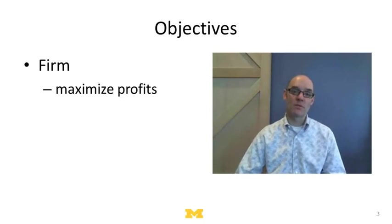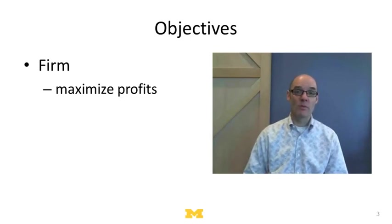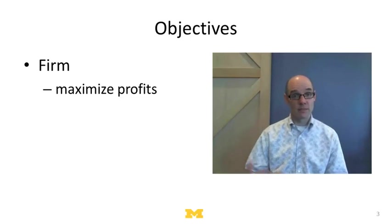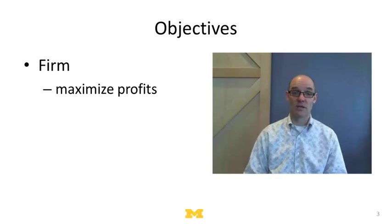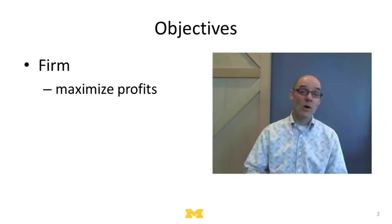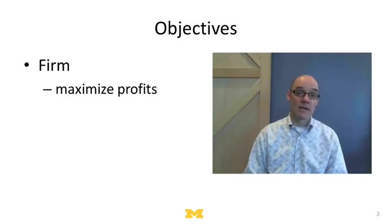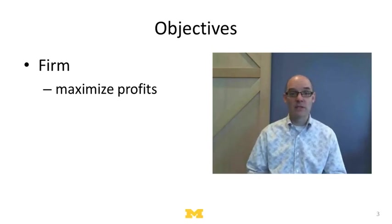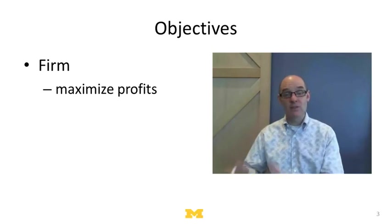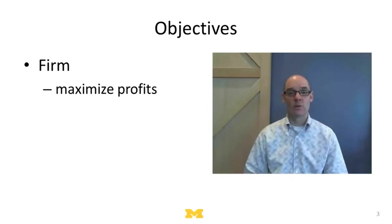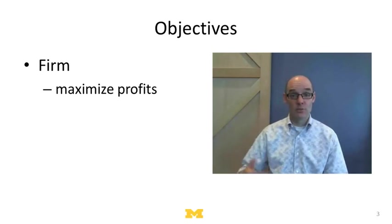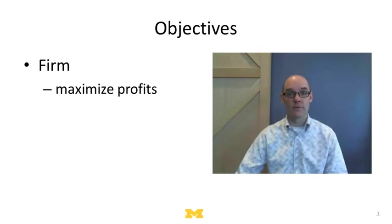Let's suppose it's a firm. If you're a firm, you might want to maximize profits, or you might want to maximize market share, or you might want to maximize total revenue. Those are all things a firm might want to do. If that's your objective, what we assume in the rational actor model is that you make the choice that maximizes that goal.